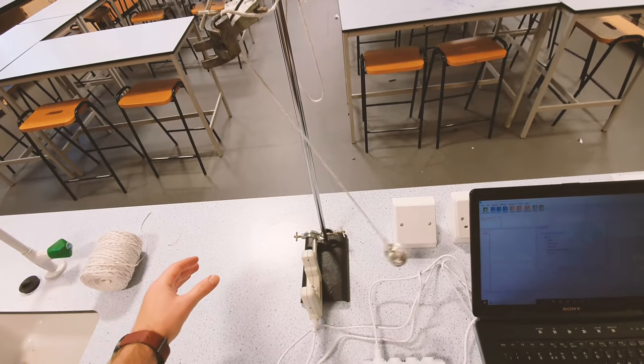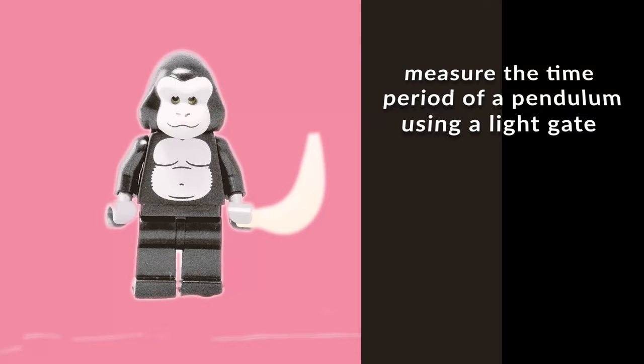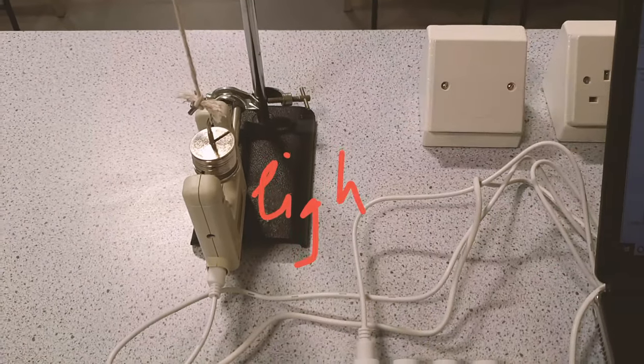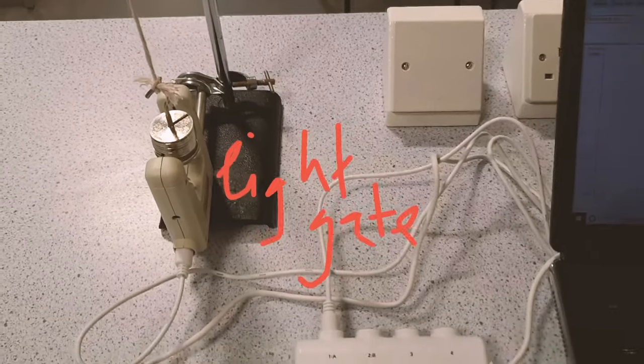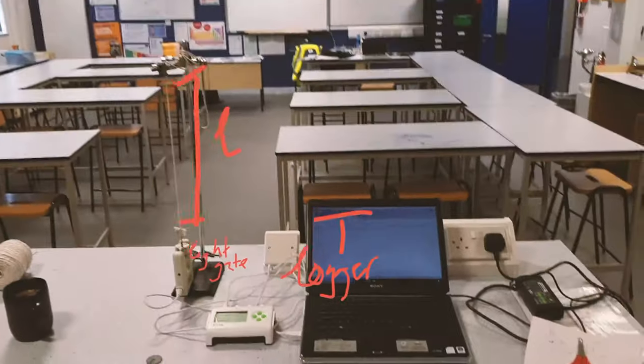Here we're using Data Harvest LightGate and DataLogger to measure the time period of a pendulum. So that's the LightGate there. This is the DataLogger itself, the VLOG system, and then that goes into the laptop which records the data onto the VLOG software.